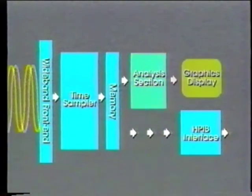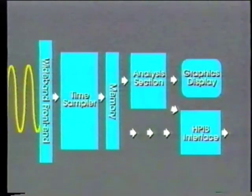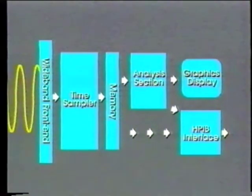From here, the raw binary data takes one of two routes. It can be sent through the HPIB interface for analysis by an outside computer, or it is sent to the analysis section of the 5371A. Results are then shown graphically on the display screen, or sent in floating point or ASCII format through the HPIB interface to an outside computer.